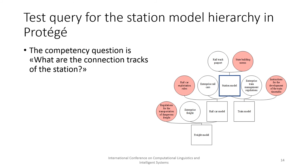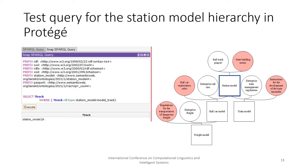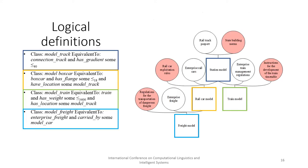The competency question is: what are the connection tracks of the station? SPARQL hierarchic viewing is performed in SPARQL Entailment Regime to get track information after reasoning on the ontology. Then the enterprise data ontology modules and restrictions from the user regulations were imported into the rail car model ontology and linked together.